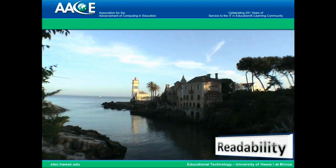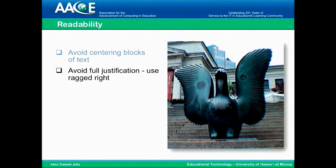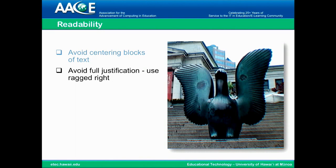Readability. Avoid centering large blocks of text — when things are centered, your eye goes back and forth and tends to lose its place. The same thing is true for full justification. We've learned to use the edges — the left side being straight and the right side being ragged — to find our place. Once you're fully justified, it's very hard to read. Also, use bullet points, not sentences, for things that are easy to read.